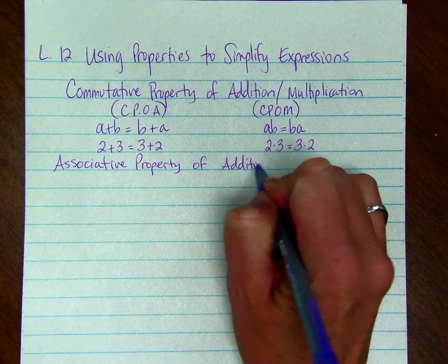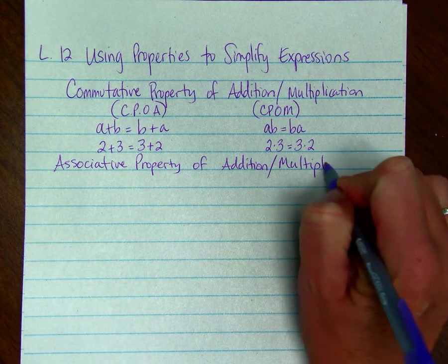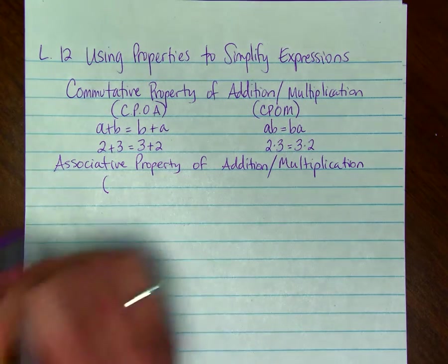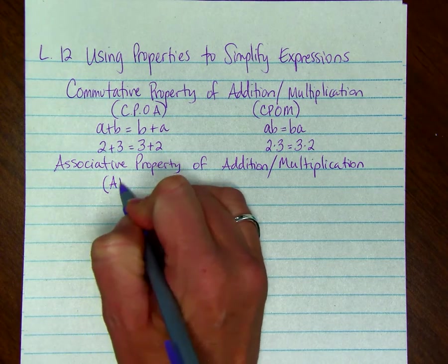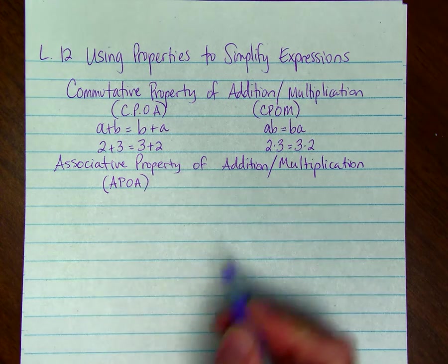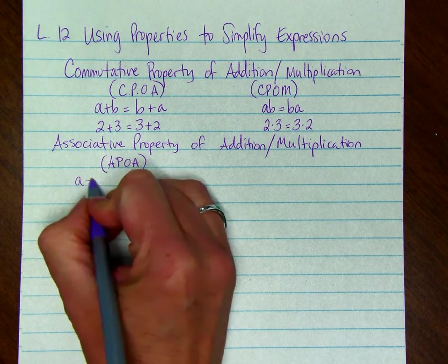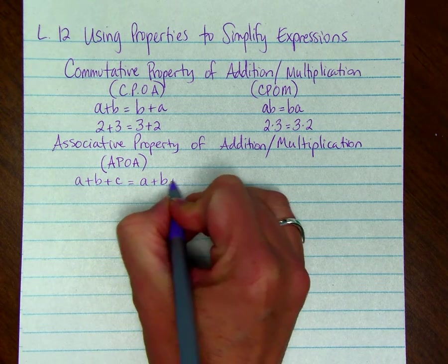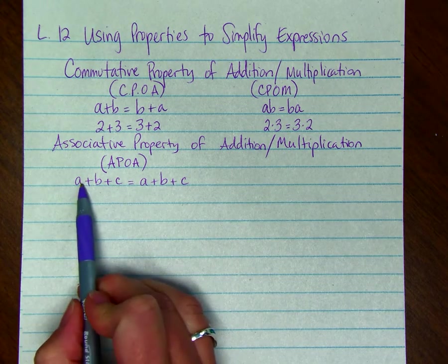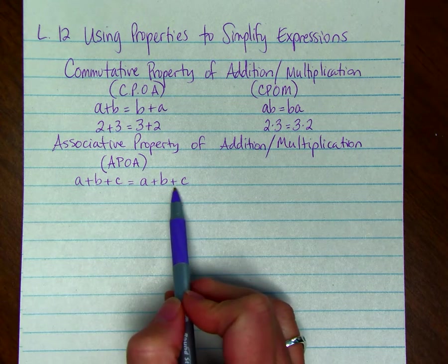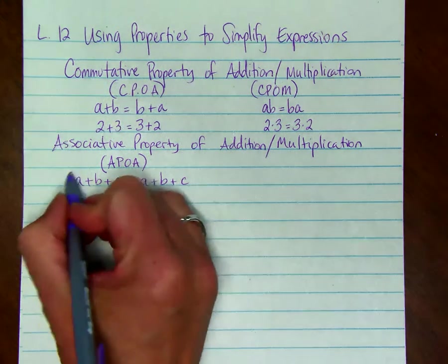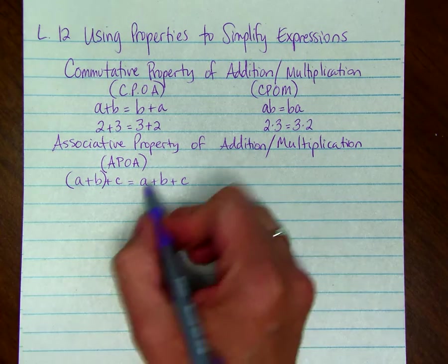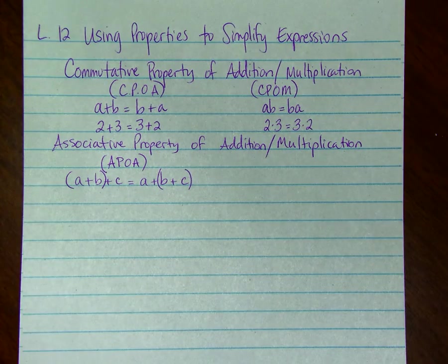You can write the associative property of addition using the capital letters APOA. An example is A plus B plus C equals A plus B plus C. The key to the associative property is that the order of the numbers does not change. So if we group the first two numbers and add the last, it's going to be the same as if we add the last two and then add the first.